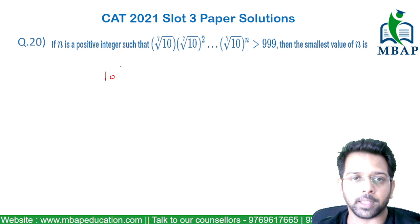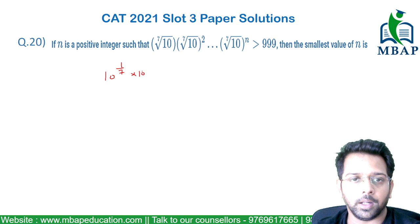What are these values? If I have to rewrite this in this form, this will be 10 raised to 1/7 times 10 raised to 2/7 multiplied by till 10 raised to n/7.